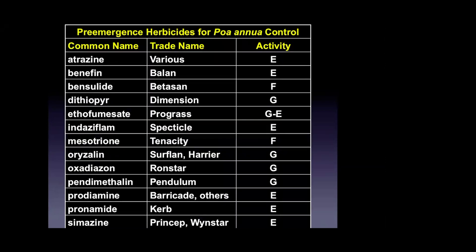Pre-emergent herbicides for controlling winter annual weeds like Poa annua — many products that control crabgrass and goosegrass also provide pre-emergent control of annual bluegrass. Products like prodiamine and pendimethalin can be used in the fall for this purpose. One of the most popular herbicides now in lawn care, golf course turf, and parks is spectacle — the active ingredient indaziflam — which has very good activity on Poa annua and provides a different mode of action from the dinitroanilines used for crabgrass.